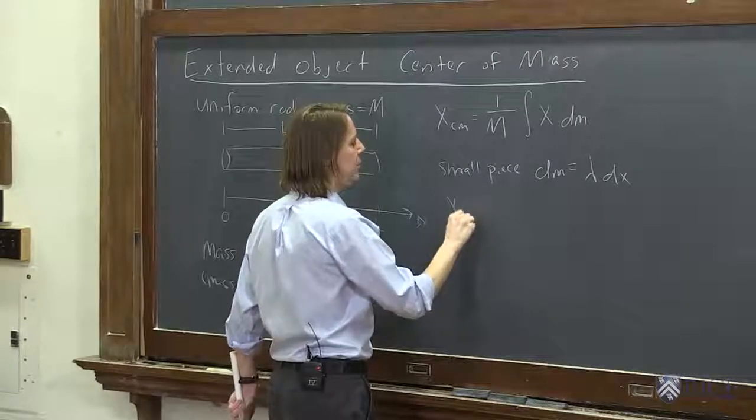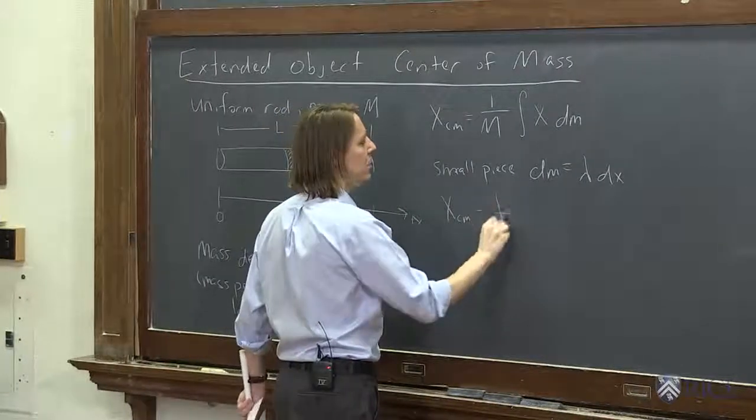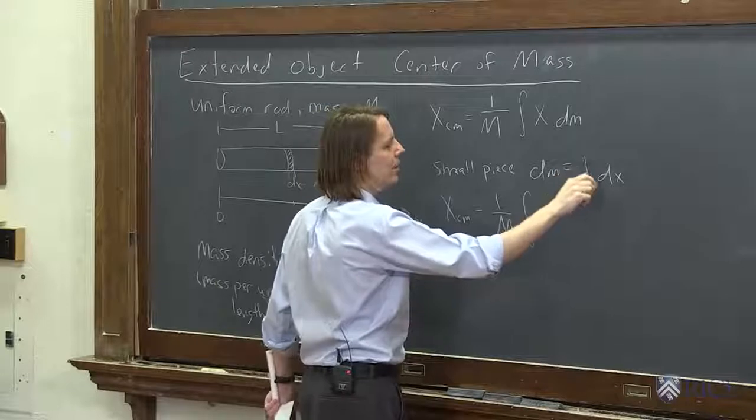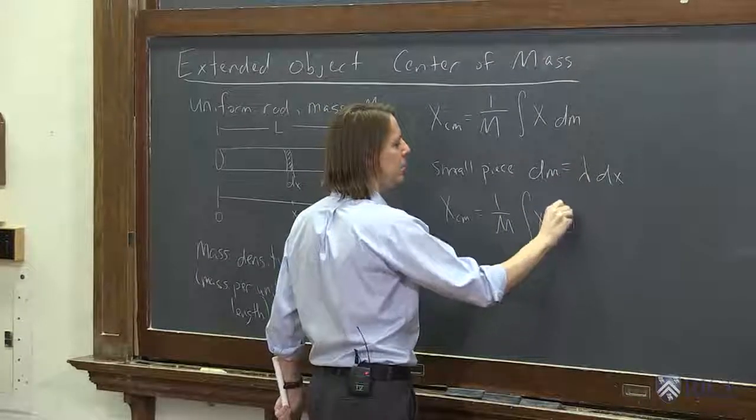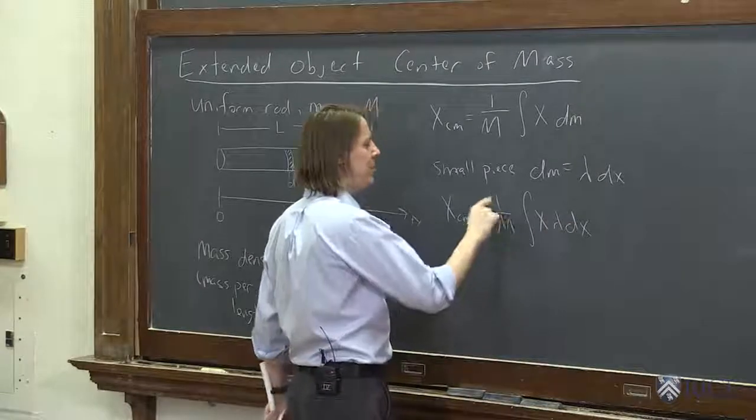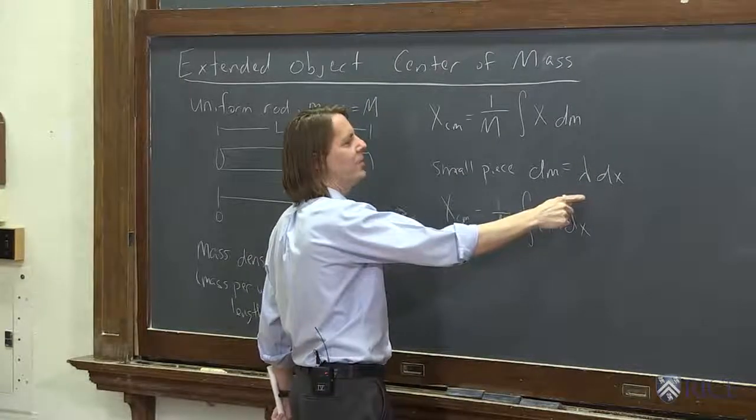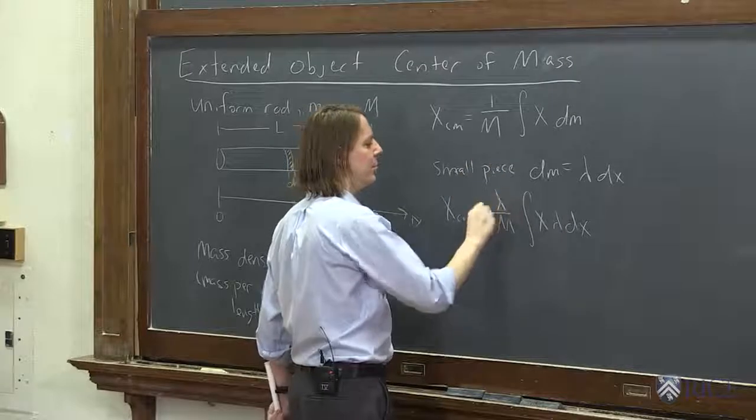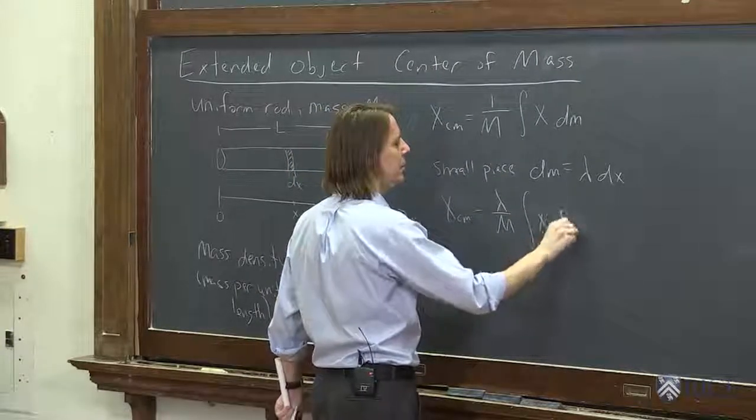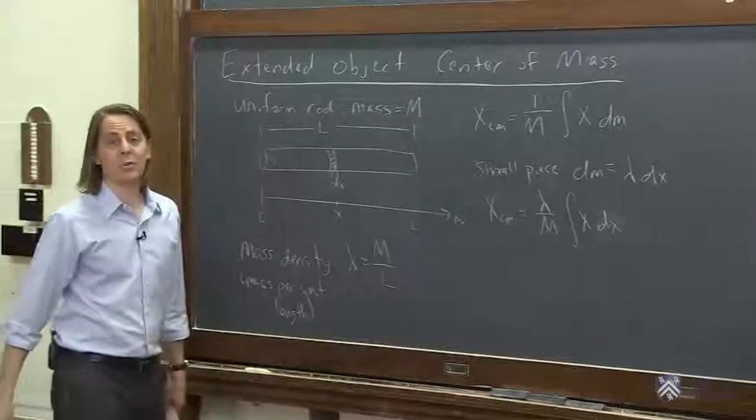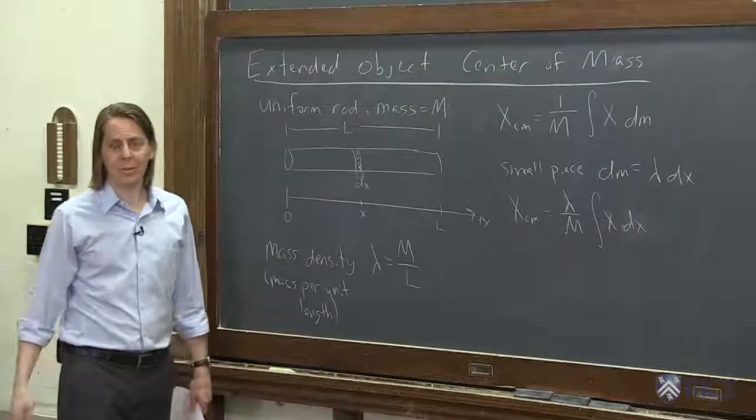So we get that the center of mass position is 1 over big M times the integral of x lambda dx. But we're tricky, so we know we can go ahead and pull the lambda out. It's a constant, so we can pull lambda out here. And then now we're simply looking at the integral of x dx. But I didn't put the limits on the integral. The most important thing, well not the most important, among the most important things, is that we have to think about we're adding these masses up from where to where.